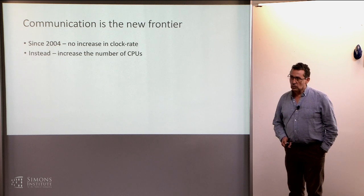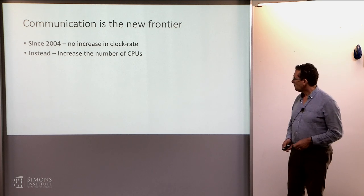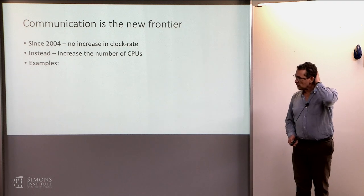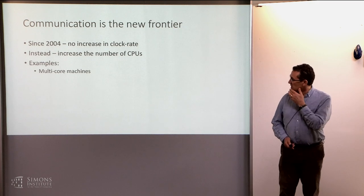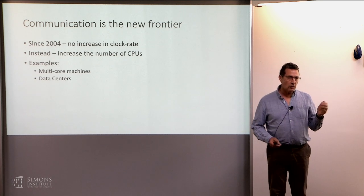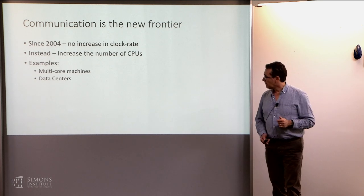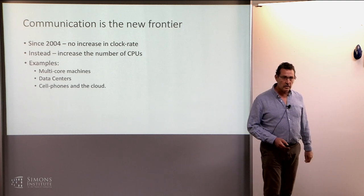So the only way to actually get more computation done is to get many computers. And there are many examples of that. Multi-core machines, we all have multi-core machines on our laptops. Data centers have hundreds of thousands of machines. And cell phones, right? Cell phones are computers and we can do some kind of distributed computing tasks on those things.